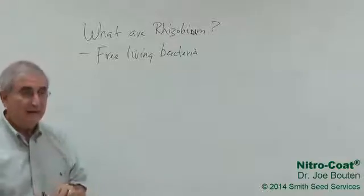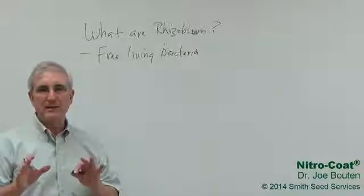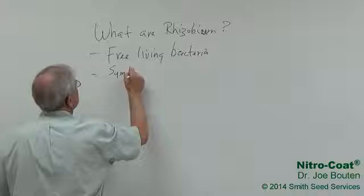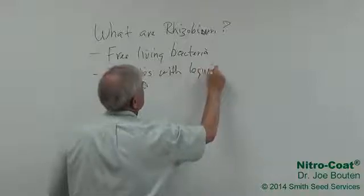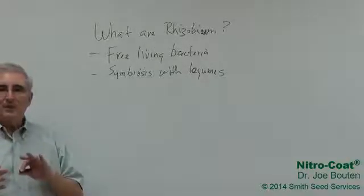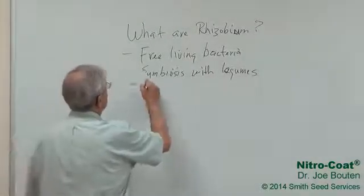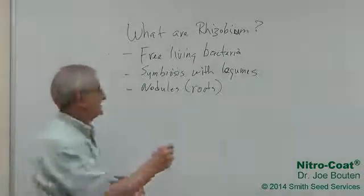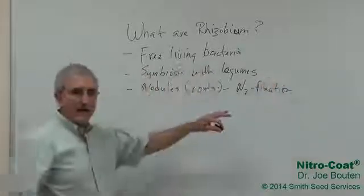Second of all, they form a very specific relationship with legume crops called a symbiosis. That symbiosis leads to them infecting the roots of these legume crops and forming nodules on the roots, which really become nitrogen-fixing factories. This is why it's so agriculturally important.